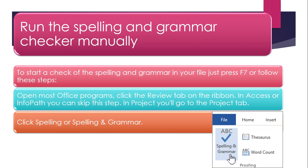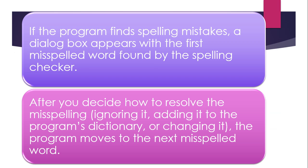As you can see, below the File tab there is an option of Spelling and Grammar. If the program finds spelling mistakes, a dialog box appears with the first misspelled word found by the spelling checker. After you decide how to resolve the misspelling — ignoring it, adding it to the program dictionary, or changing it — the program moves to the next misspelled word.